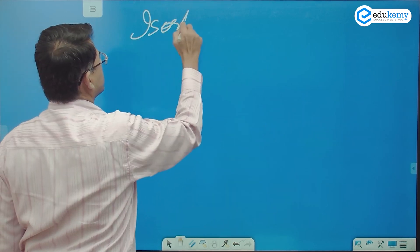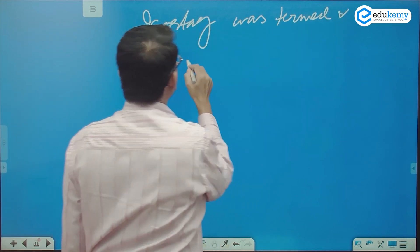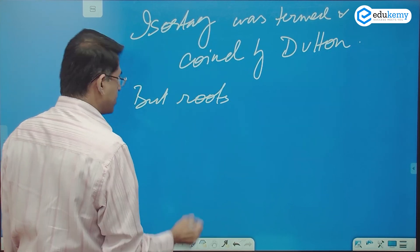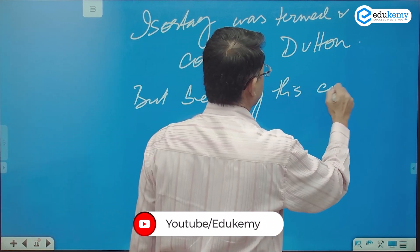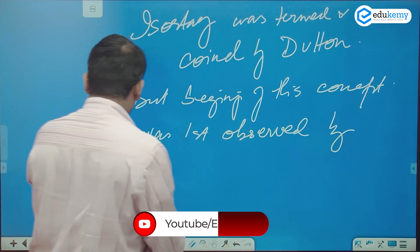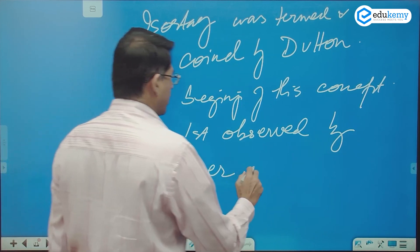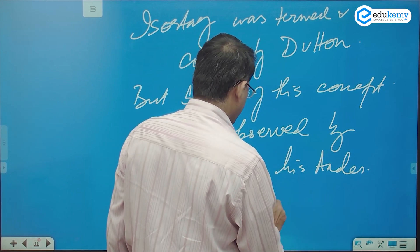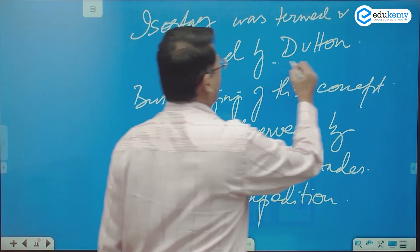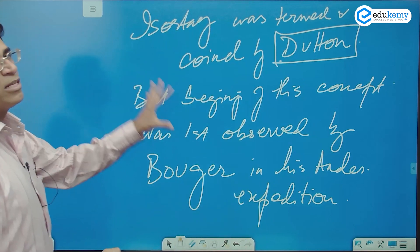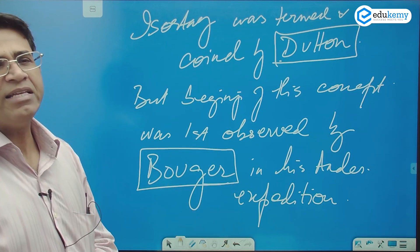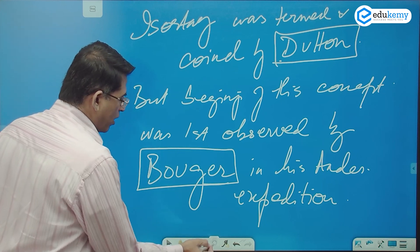The term isostasy was coined by Dutton (D-U-T-T-O-N), but the beginnings of this concept were first observed by a French scholar called Bouguer (B-O-U-G-E-R) during an expedition.